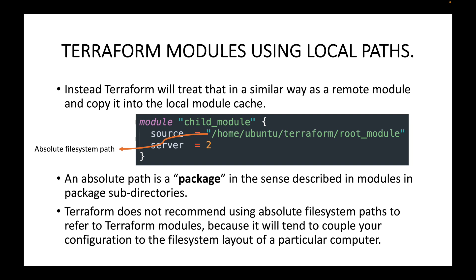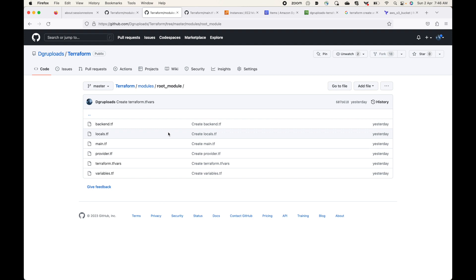An absolute path is treated as a package, as described in modules in package sub-directories. Terraform does not recommend using absolute file system paths to reference Terraform modules, because it tends to couple your configurations to the file system layout of a particular computer. Instead, Terraform recommends using dot-slash (./) or dot-dot-slash (../) for local paths.